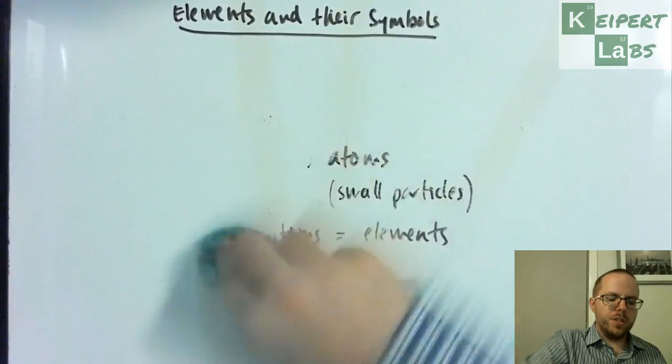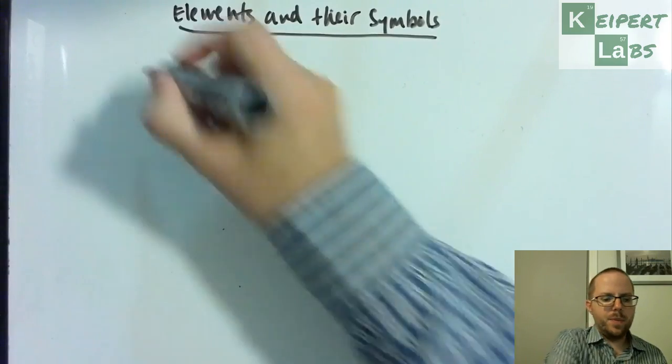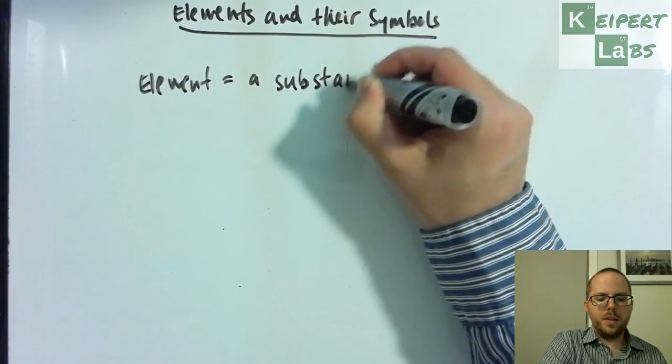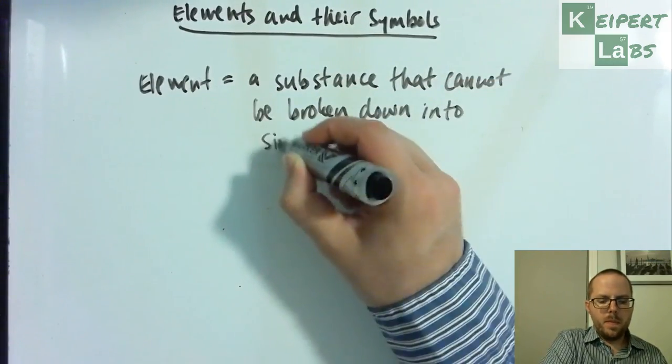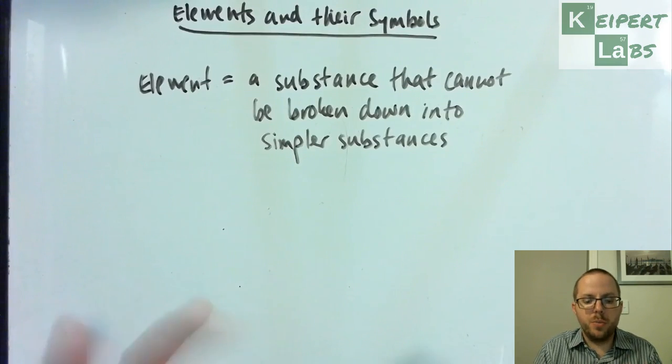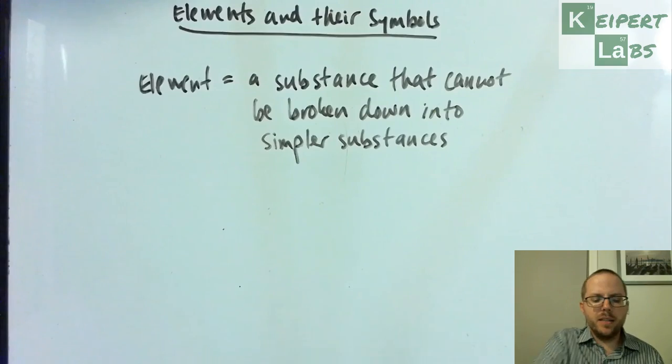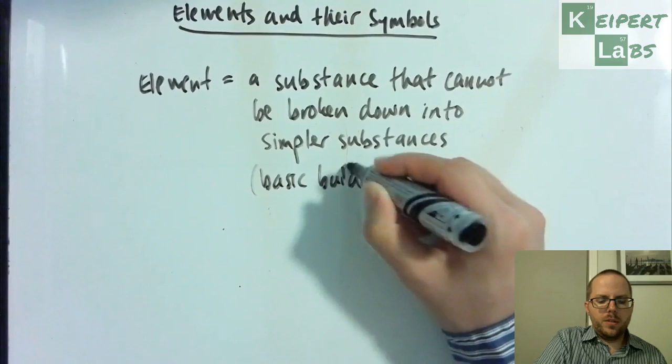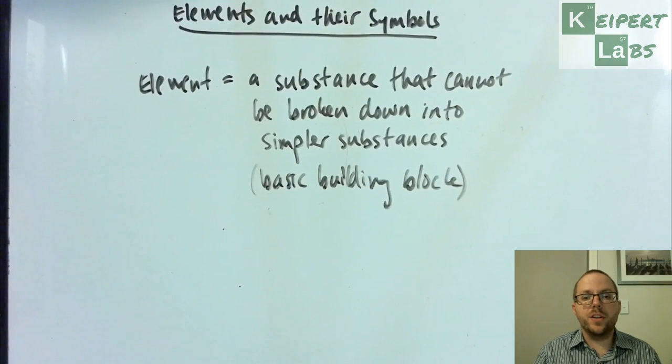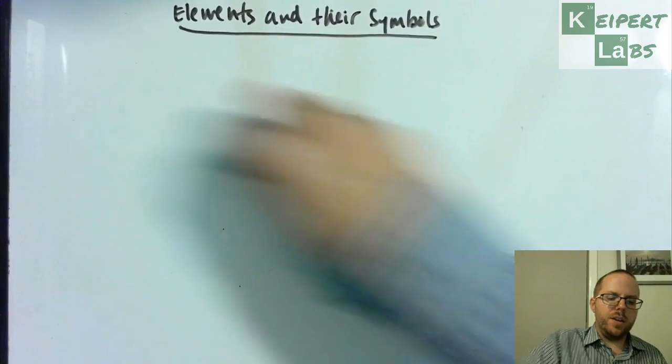At its heart, an element is a substance that cannot be broken down into anything simpler. If you take a substance and break it into simpler substances, eventually you get to a point you cannot break it anymore. It's the simplest that it will go - the most basic building block. We use these basic building blocks to construct more complicated things, just like Lego blocks that you can pull apart and use to build different things.